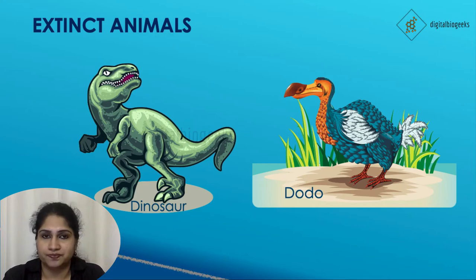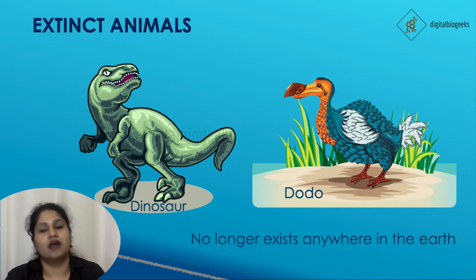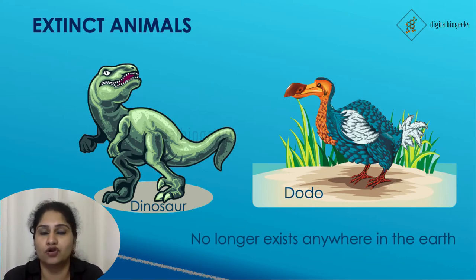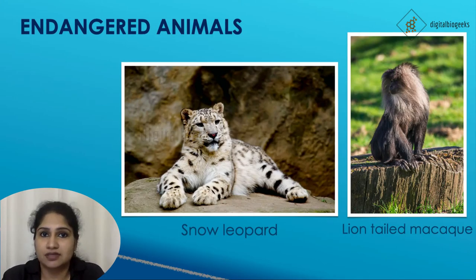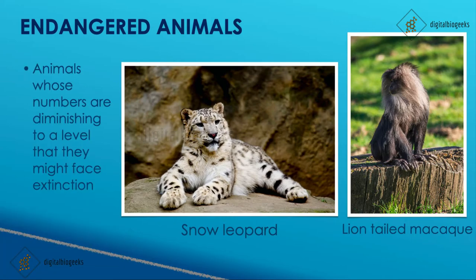Extinct animals are those that no longer exist in this world — examples we all know are dinosaurs and the dodo. Endangered species are those animals whose numbers are diminishing to a level that they may face extinction in the near future. Some examples of endangered animals are the snow leopard and the lion-tailed macaque.